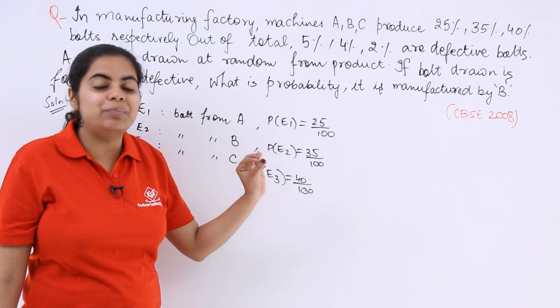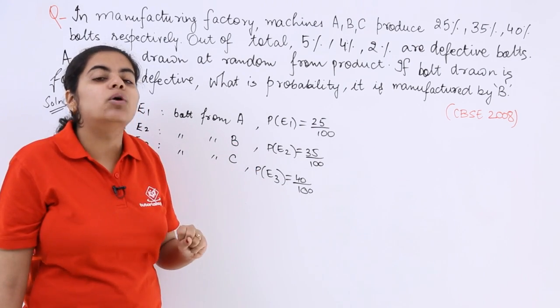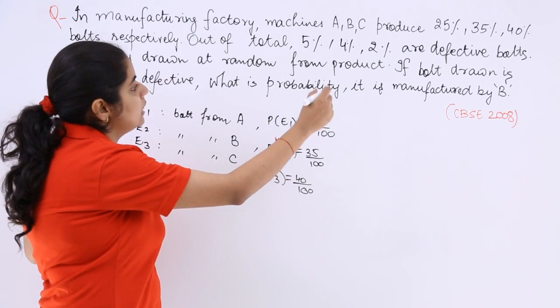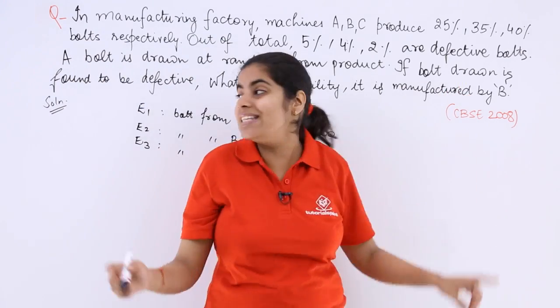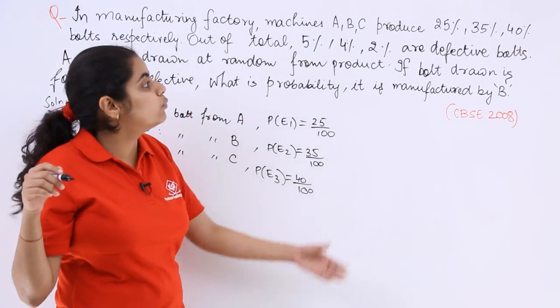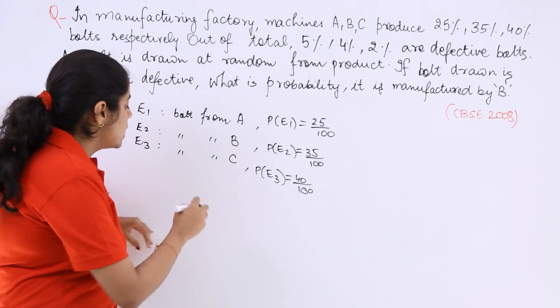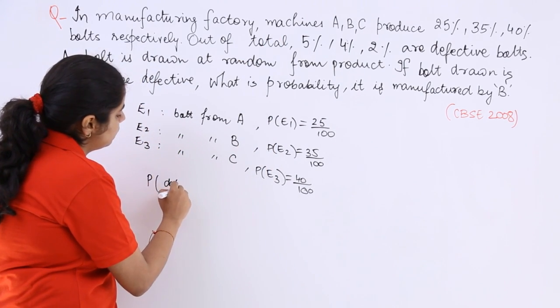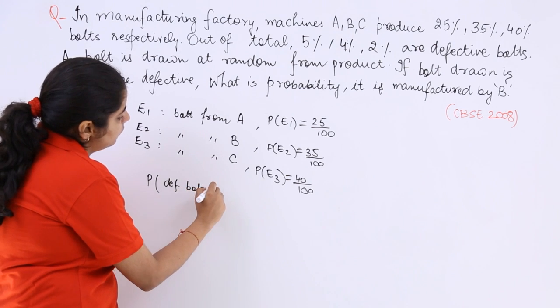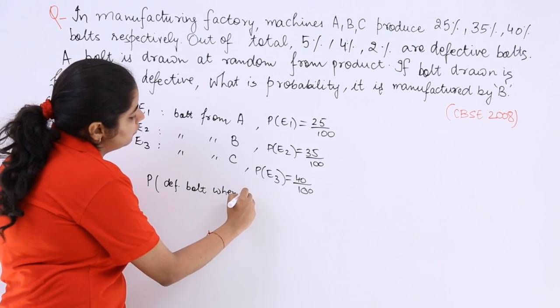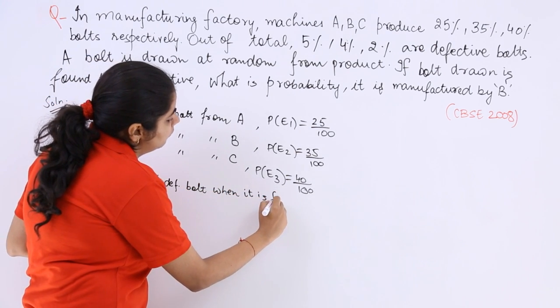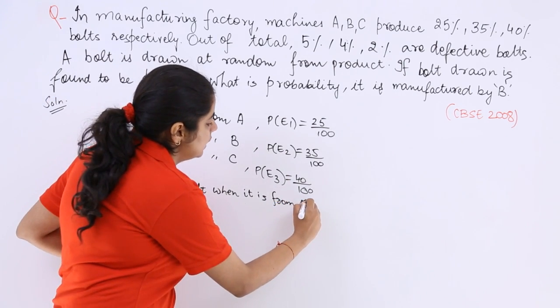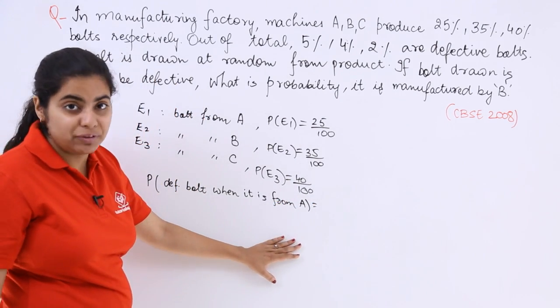Now this is P(E1), P(E2), P(E3). Now we are going to consider the defective bolt probability, which is also given. So probability of defective bolt when it is from machine A.